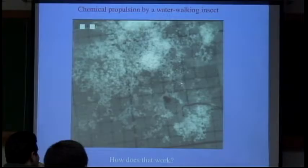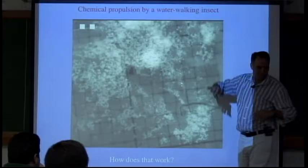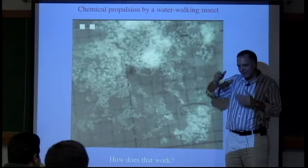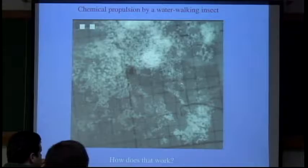Here's a natural example of a surfactant. This is basically a bug walking on water. We put powder on the surface so we can see what's happening. The bug basically releases a chemical that reduces the surface tension, so it's sitting on the surface in a surface tension gradient and gets pulled in the direction of higher surface tension. These bugs actually use this as an emergency escape mechanism.